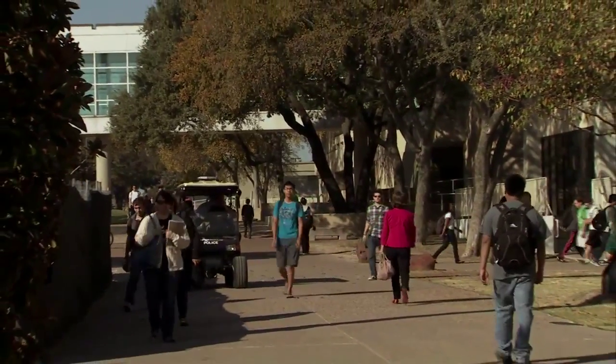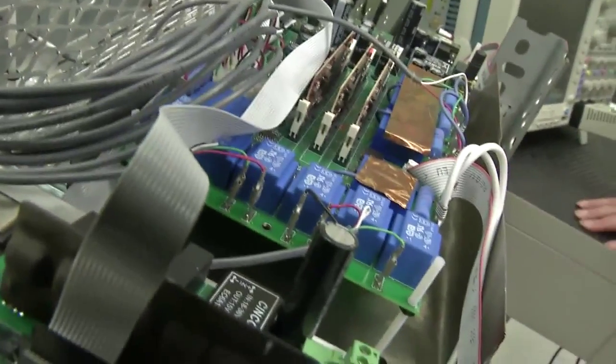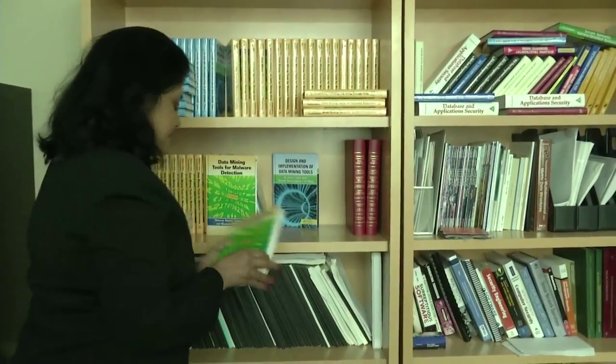Location, location, location. UTD is in the heart of the Dallas-Fort Worth Metroplex and because of that we have at least 500 companies within a five mile radius. Texas is the state of energy and Dallas is the largest city in the country without a major research university. UT Dallas as a whole is on a mission to become a tier one research university.